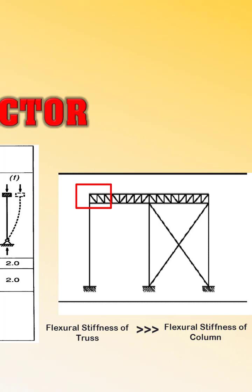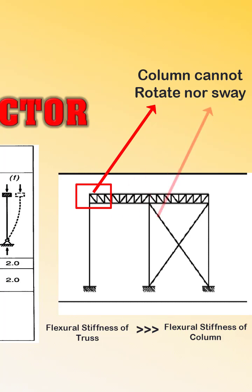Here the relative stiffness has a very large difference. So in that case, the top support of the column is also considered as fixed where the rotation is not allowed, where the column cannot easily rotate, and side sway is prevented by the cross bracing.